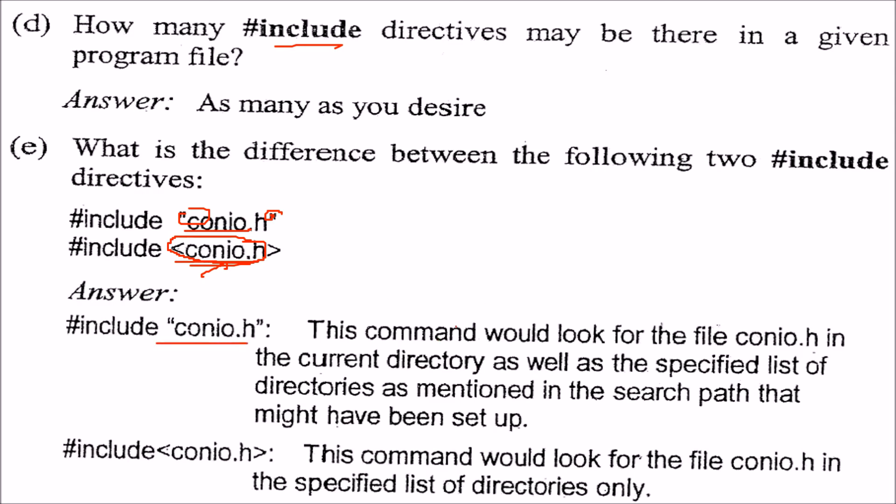If you use double quotes, this command would look for conio.h in the current directory where you are, as well as the specified list of directories you mentioned in the search path.